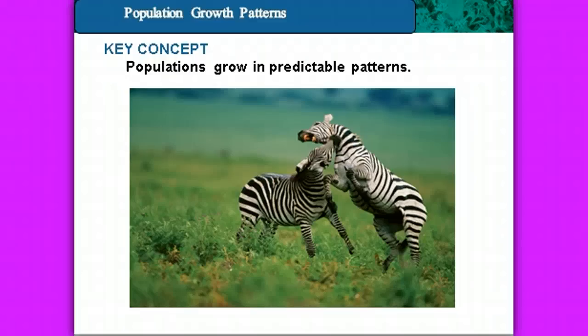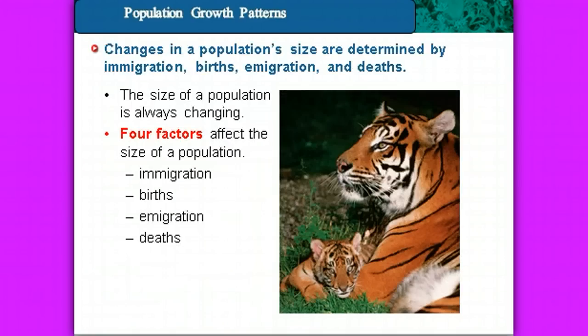Our key concept this time is that populations grow in predictable patterns. When we look at organisms and populations in nature, we can study them in predictable ways. Changes in population size are determined by immigration, births, emigration, and deaths.